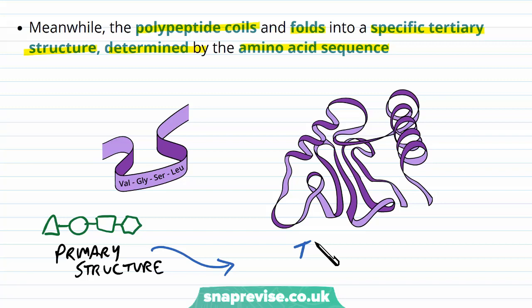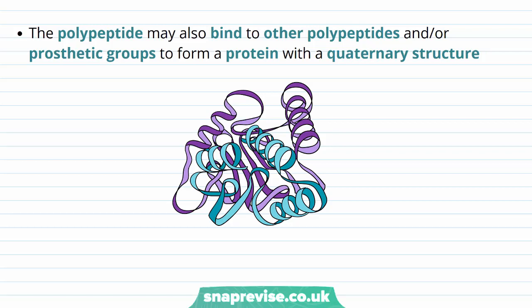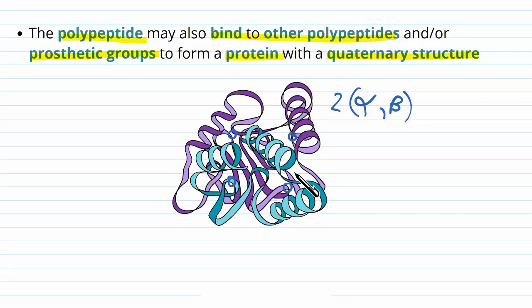The polypeptide may also start binding to other polypeptides or prosthetic groups, making a protein with a quaternary structure. For example, with hemoglobin, we would have two alpha chains and two beta chains, and these would fold up into a large hemoglobin molecule with prosthetic heme groups in the middle as well.